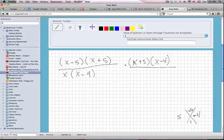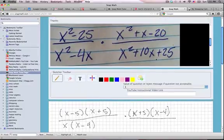x squared plus x minus 20 will factor into x plus 5, x minus 4. And one more to go.